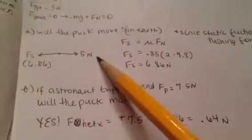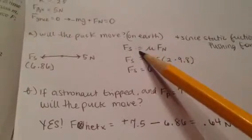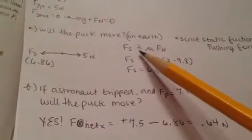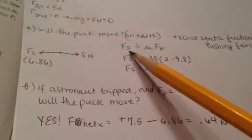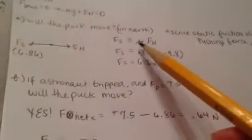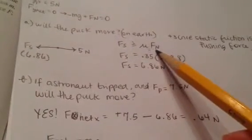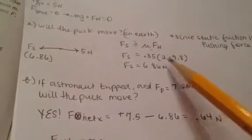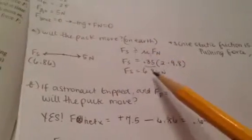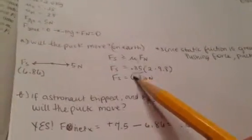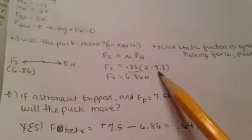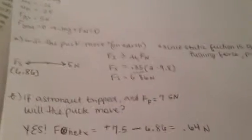We're given the pushing force as 5 newtons. Static friction is less than or equal to the maximum, but here we want the maximum static friction to determine if the puck can move. So it's the coefficient of static friction times the normal force. The normal force is mass times gravity, and we use static friction because the initial velocity of the puck is 0. Plugging in: 0.35 times the normal force gives us 6.86 newtons.